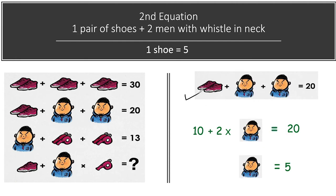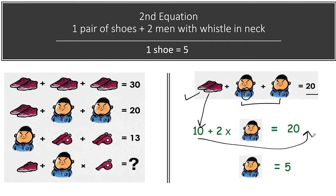Moving to the second equation, we have two shoes and two men wearing a whistle, with a total value equal to 20. We know the value of two shoes is 10, so we solve: 20 minus 10, divided by 2, for a single man wearing a whistle.